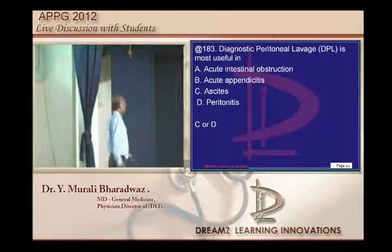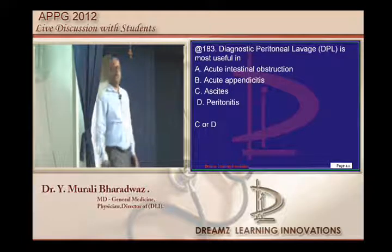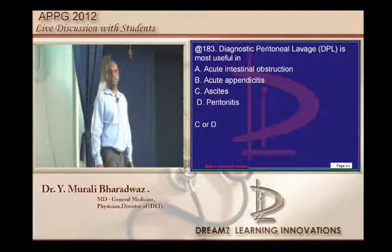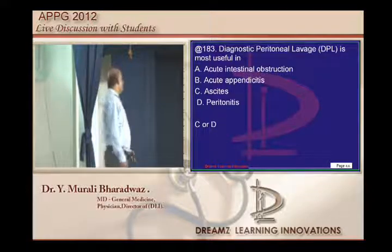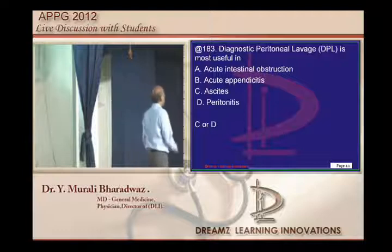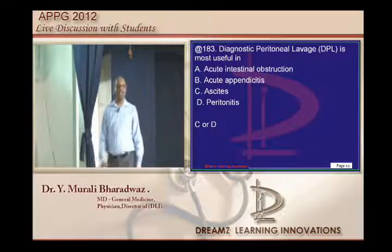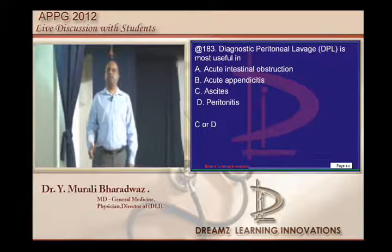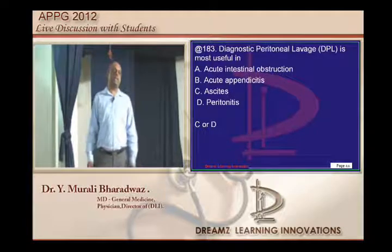Diagnostic peritoneal lavage, also called paracentesis, is used to differentiate secondary bacterial peritonitis from spontaneous peritonitis. It is also used to differentiate transudative from exudative ascites.